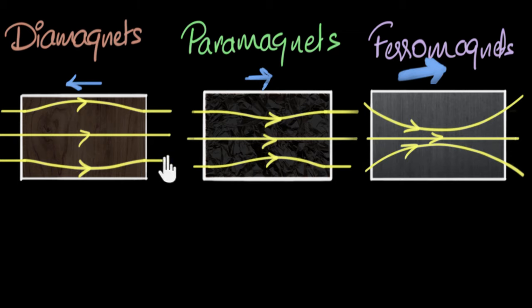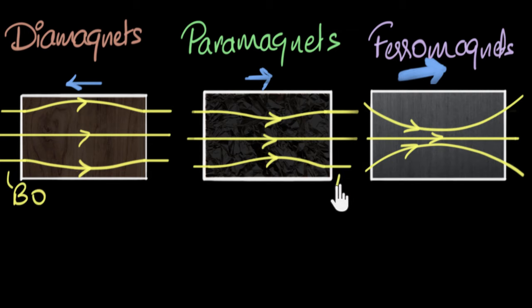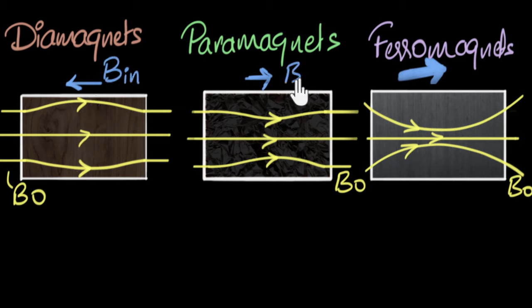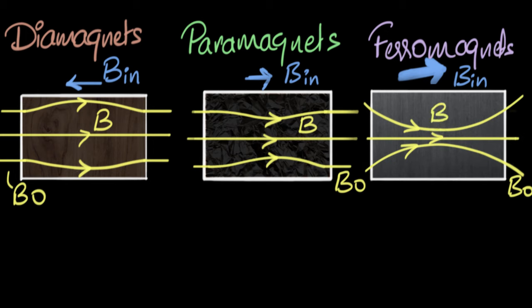To start putting a number to this, we need to label these magnetic fields. First, the field in vacuum (in the absence of the material) is called B-naught. Then we have the field that gets induced as the material reacts — let's call it B-induced. The total field inside is the vector sum of these two, which we'll just call B. The main question is: what does this induced magnetic field depend on?